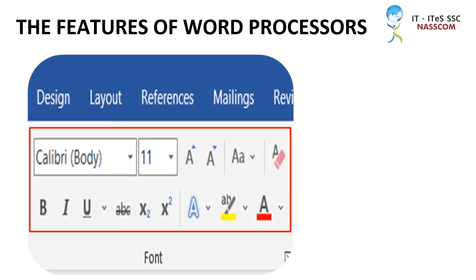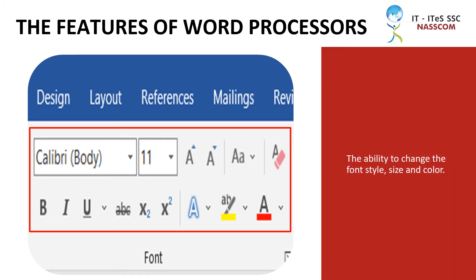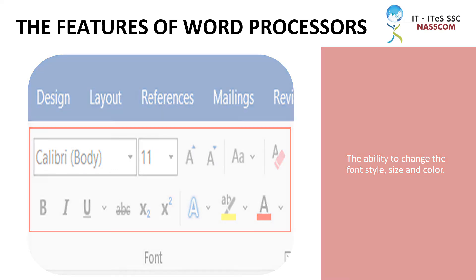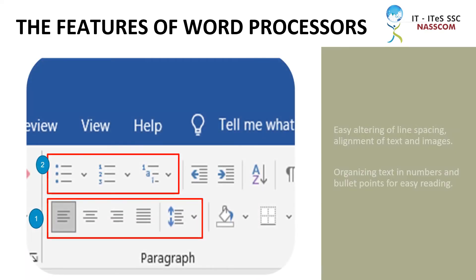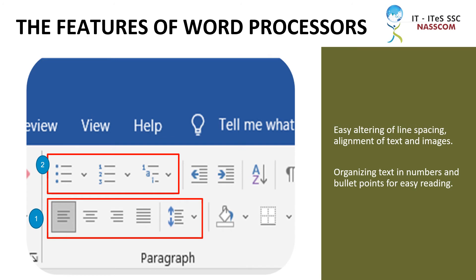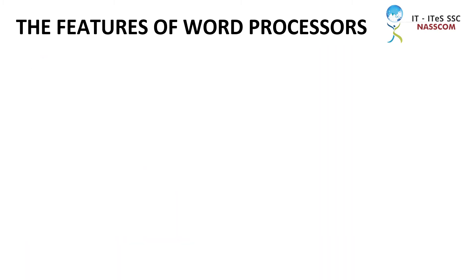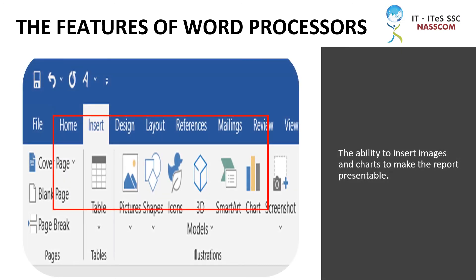The features that make word processors useful for writing reports include the ability to change the font style, size, and color; easy altering of line spacing; alignment of text and images; and organizing text in numbers and bullet points for easy reading.